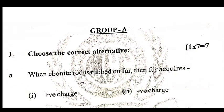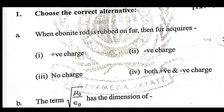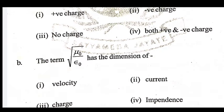For Plus Two second year science students, only science students — let's look at physics questions. When an ebonite rod is rubbed on fur, the fur acquires negative charges. This is an electrostatic question. The first question: which term has the dimension of charge?